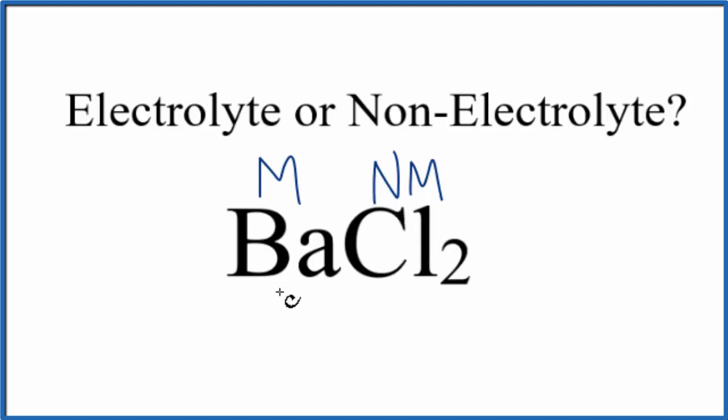If this is a soluble compound, when it dissolves, it'll split apart into its ions. If you know your solubility rules, ionic compounds that have chlorine, the chloride ion, are soluble in water. So it'll dissolve and split apart into its ions in water.